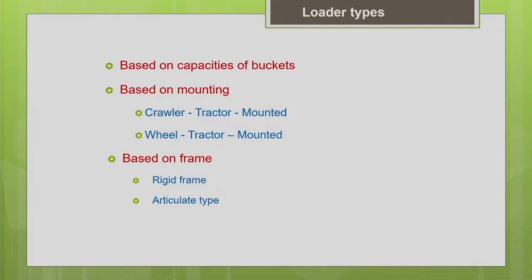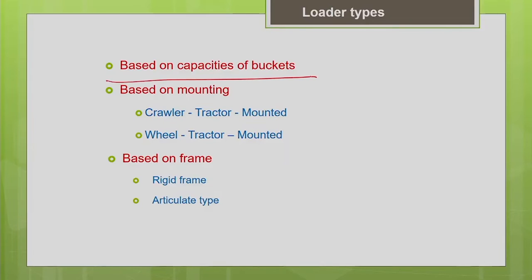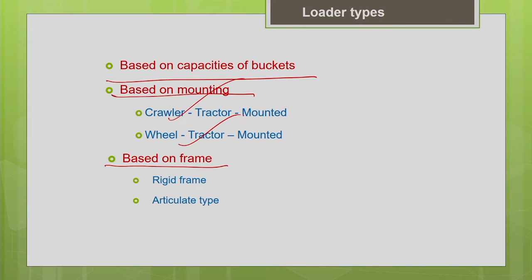Now let us see the types of loaders. You can classify the loader based on bucket capacity, mounting, or frame. Based on bucket capacity, the range is from less than 1 cubic meter — say 0.2 cubic meters — up to as large as 15 cubic meters. Based on mounting, it can be crawler/track-mounted or wheel-mounted. Based on frame, it can be a rigid frame or articulated type frame.